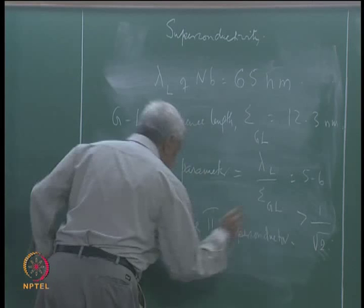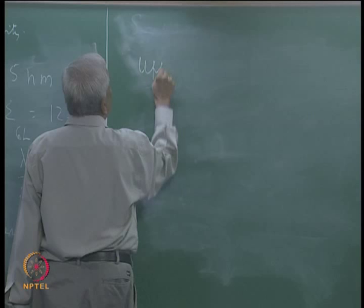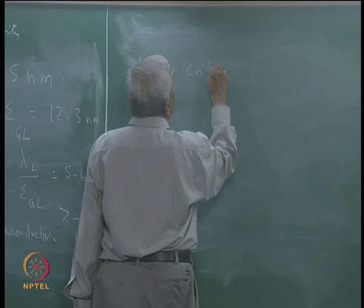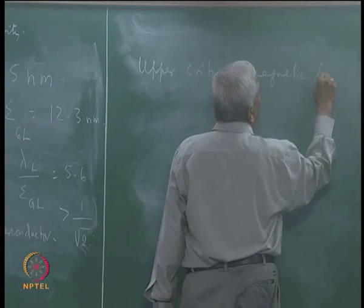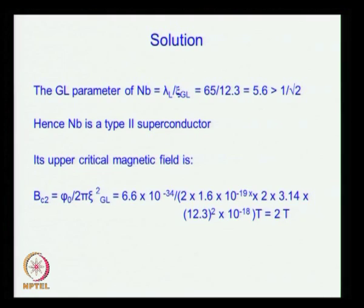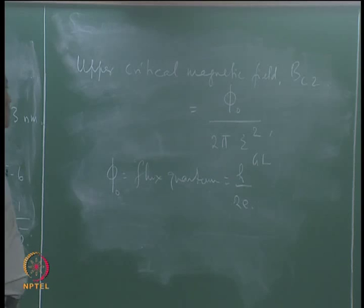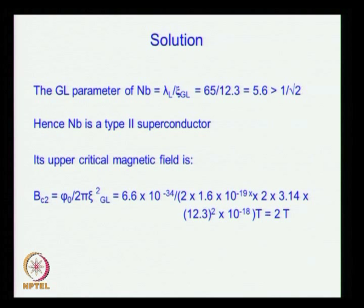We are also asked to find the upper critical magnetic field B_C2 for which flux is completely excluded from the type 2 superconductor. From the Ginzburg-Landau theory, B_C2 = φ₀ / (2π ξ_GL²), where φ₀ = h/2e is the flux quantum and ξ_GL is already given. The upper critical magnetic field turns out to be 2 tesla.